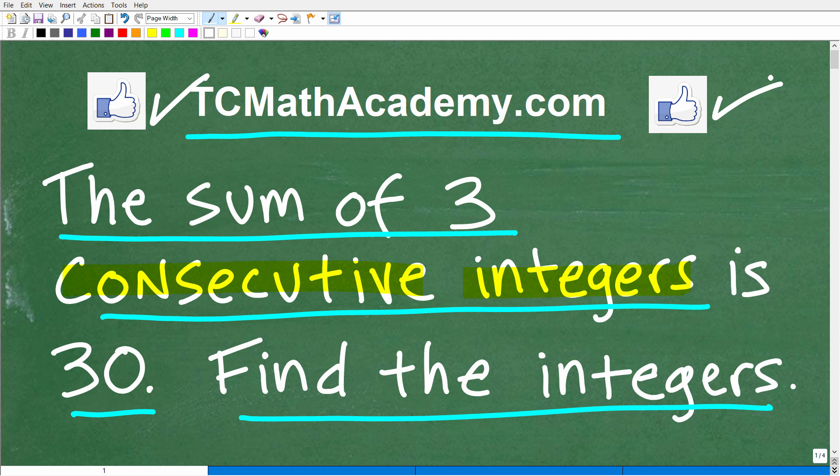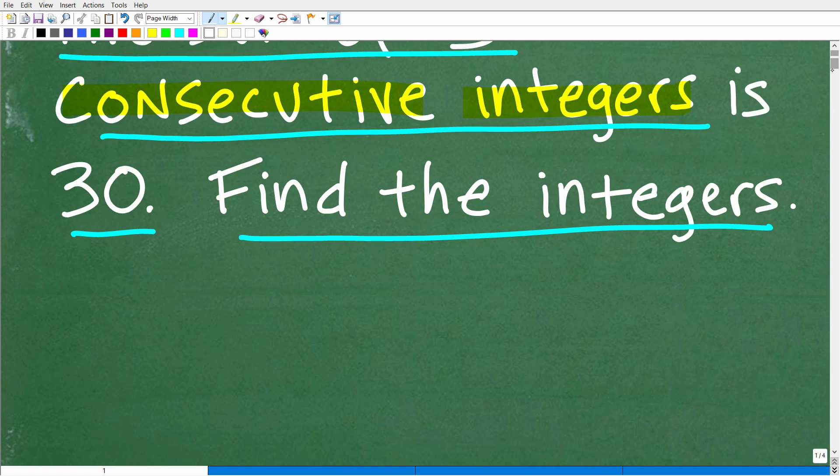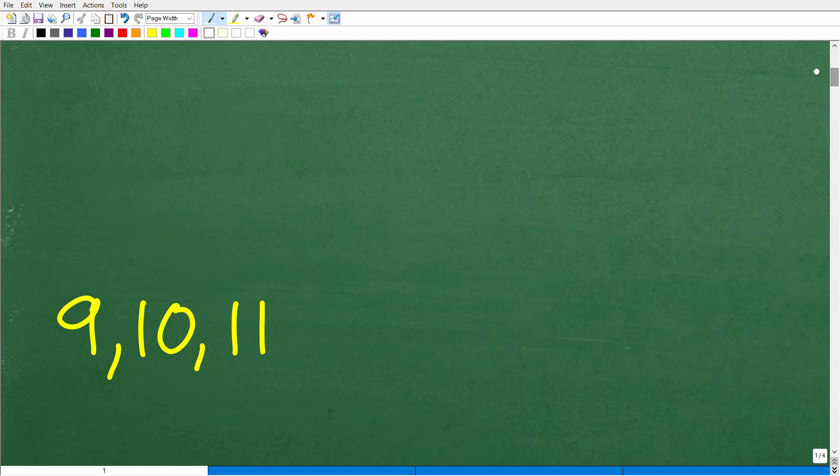Okay, so again, we have these three integers. We're looking for the integers, right? So we're looking for three numbers. Let's go and take a look at the answer. The correct answer is 9, 10, and 11. Okay, so how did you do?